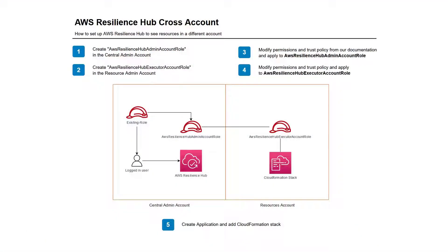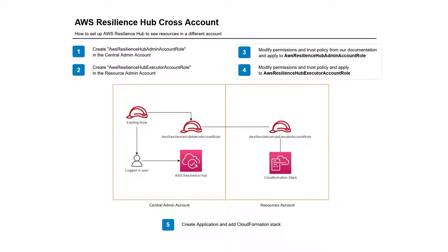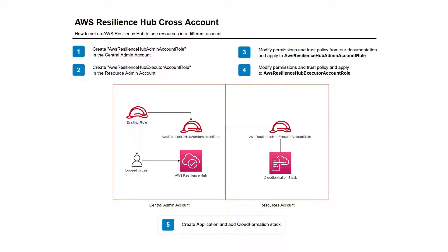This diagram shows how we'll set up AWS Resilience Hub to use an existing role in our central admin account to access resources located in our resources account. First, we'll create the appropriate role in each account. Next, we'll modify the permissions and trust policies for these roles. Finally, we'll create an AWS Resilience Hub application in our admin account and add the CloudFormation stack from our resources account.